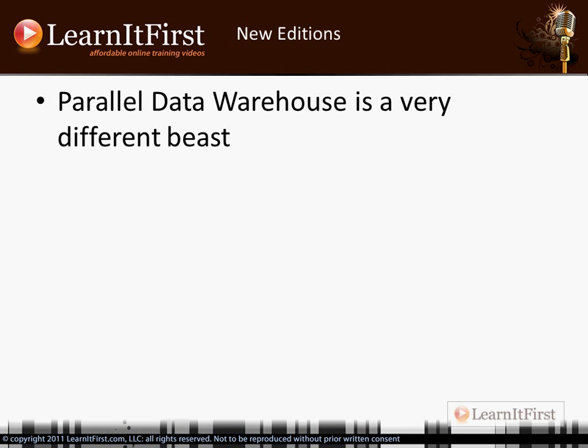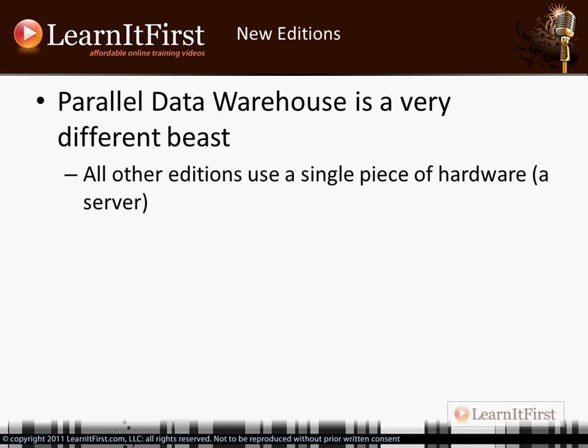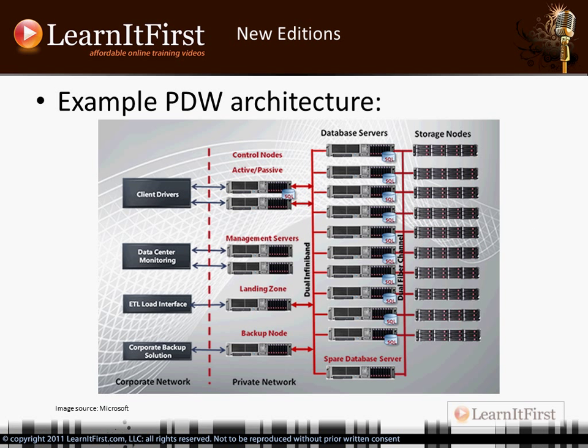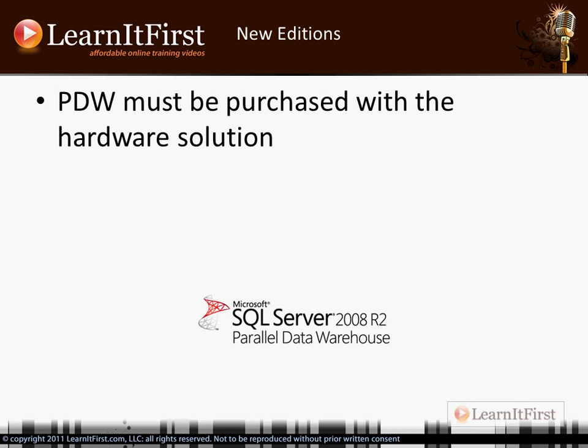Parallel Data Warehouse is a very different beast. With Standard, Enterprise, and Data Center editions you're using your own server, but PDW uses its own hardware infrastructure — blade servers, dedicated storage. I pulled a document from the Microsoft website about PDW, and you can see the racks listed: database servers, storage nodes. This is where you're going to have a month's worth of meetings with Microsoft Consulting. It'll take six months to get everything up and running, plan, and write the apps to use it effectively. You have to buy it with the hardware solution — you cannot just buy a license.